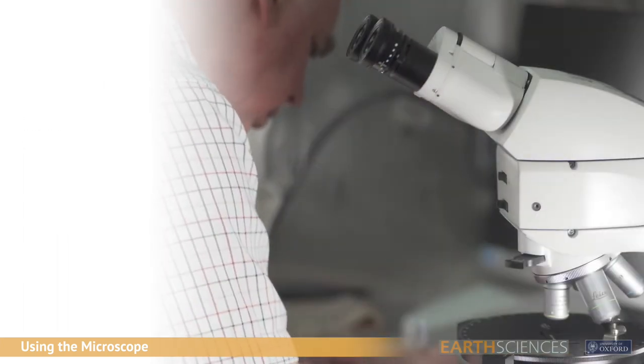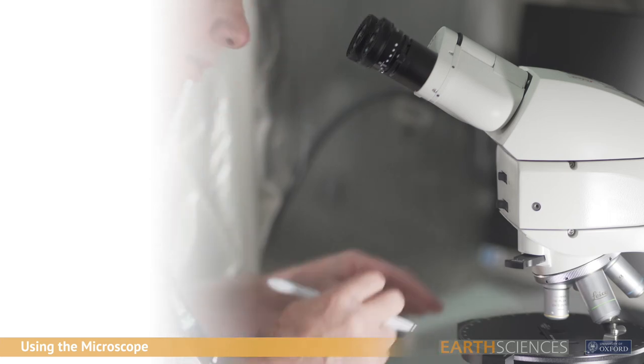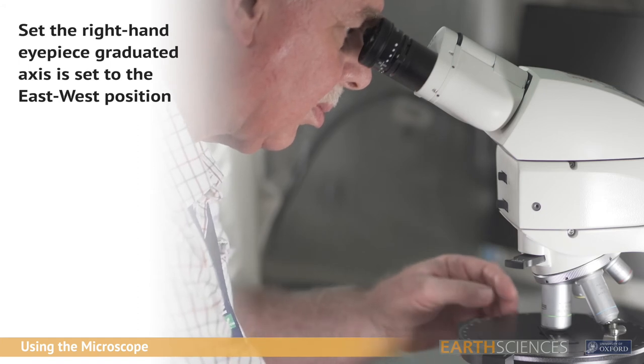The right hand side eyepiece contains a graduated crossline graticule, which needs to be sharply focused for the user's right eye. Ensure that the graduated axis is in the east-west position.